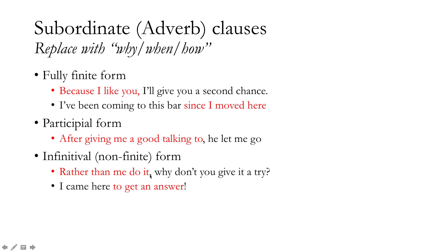You can even use a bare infinitive: 'Rather than me do it, why don't you give it a try?' This is a rarer construction — 'me do it' uses a bare infinitive — and 'rather than me do it' tells us about the conditions under which you give it a try, describing 'give it a try,' where 'give' is the verb, 'it' the indirect object, and 'a try' the direct object.